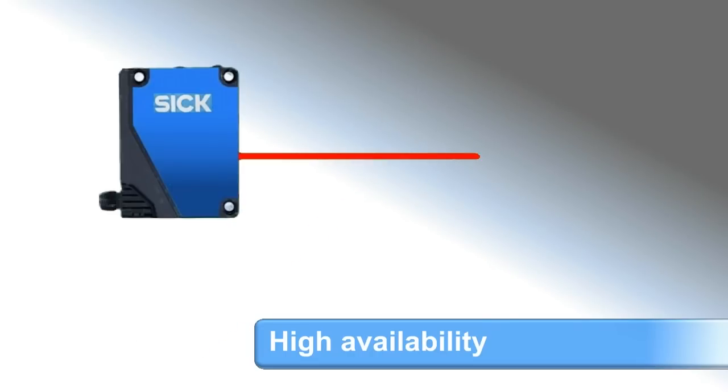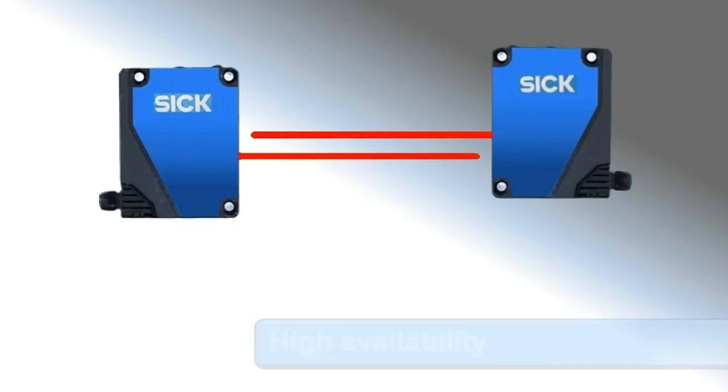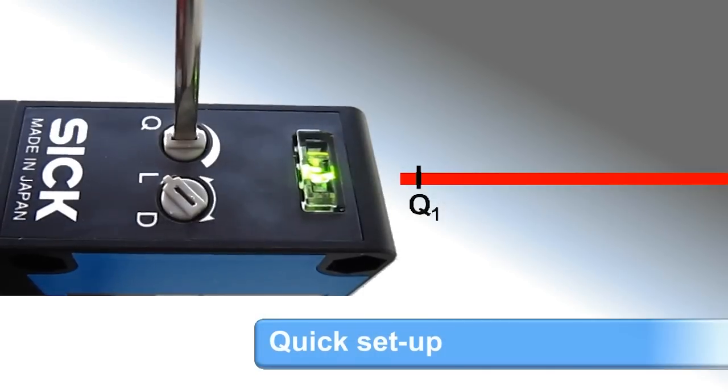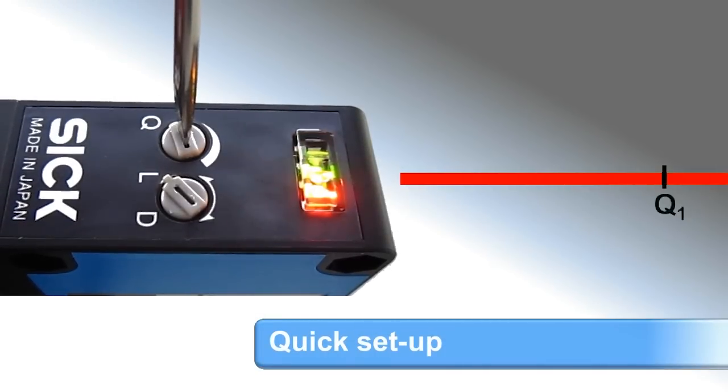And there's no crosstalk when sensors are mounted opposing each other. Its intuitive handling saves time, since the sensing range is adjusted with just one simple potentiometer. Thereby, commissioning is a snap.